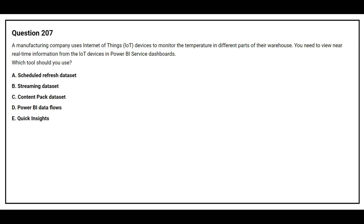Question number 207: A manufacturing company uses Internet of Things (IoT) devices to monitor the temperatures in different parts of the warehouse. You need to view near real-time information from the IoT devices in the Power BI service dashboard. Which tool should you use? Option A: Scheduled refresh dataset. Option B: Streaming dataset. Option C: Content pack dataset. Option D: Power BI dataset. Option E: Quick insights. The correct answer is option B: Streaming dataset.